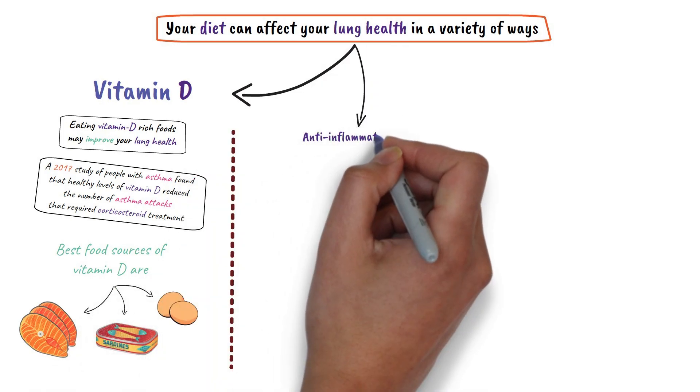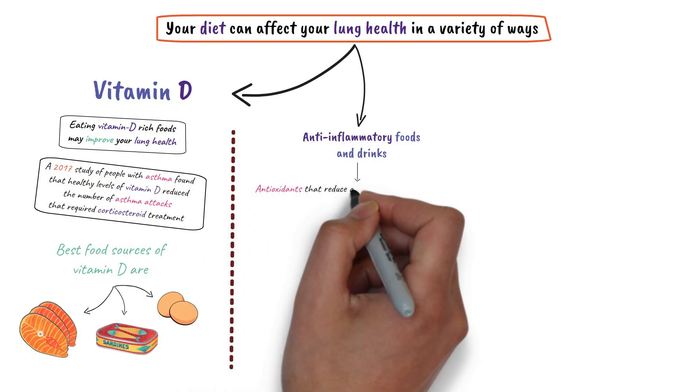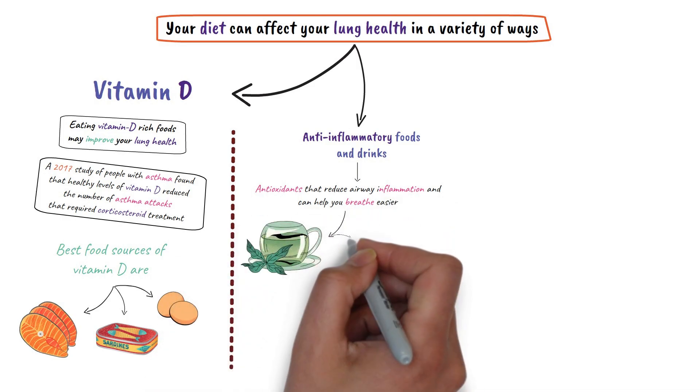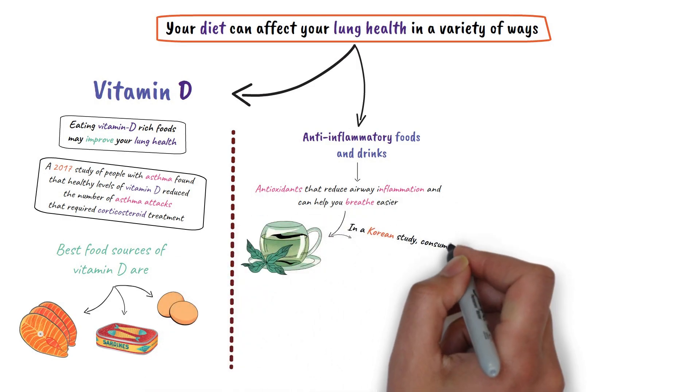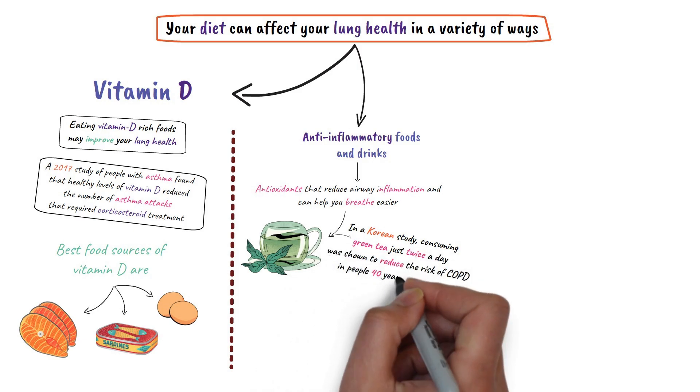Anti-inflammatory foods and drinks contain antioxidants that reduce airway inflammation and can help you breathe easier. You can try green tea. In a Korean study, consuming green tea just twice a day was shown to reduce the risk of COPD in people 40 years old and older.